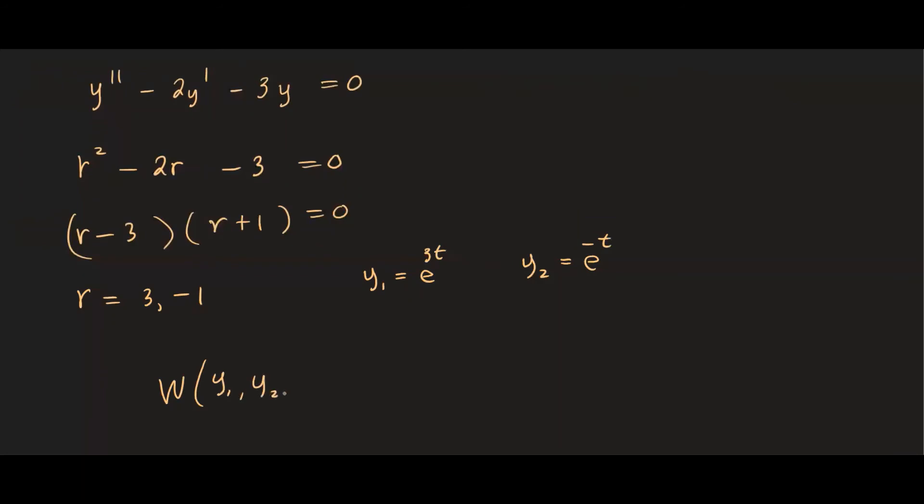The Wronskian of y1 and y2 is equal to, so we're going to set up this determinant. y1, that's e^(3t), then its derivative 3e^(3t). In the second column, we put the second function, which is e^(-t), then we have its derivative -e^(-t). Now let's go ahead and multiply them.